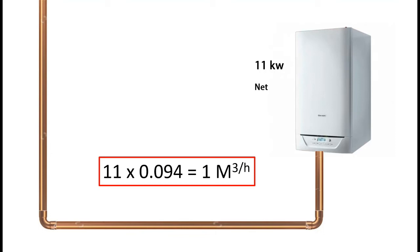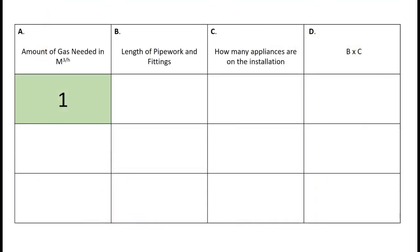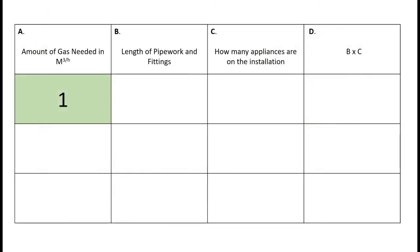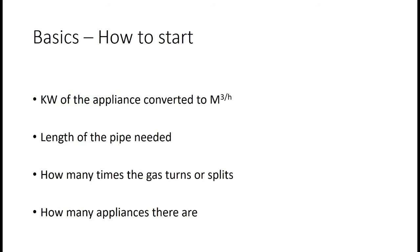That's the amount of gas that boiler needs to run correctly. We've got to make sure the pipes running to it are big enough to carry that amount of gas through the length of the pipes. So now we've got our first box filled in. The amount of gas needed is one meter cubed per hour.